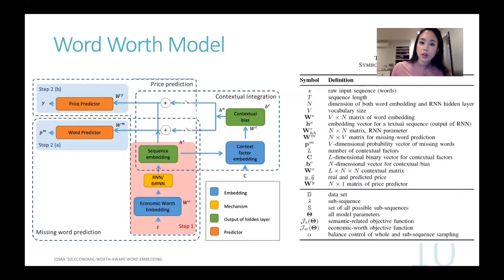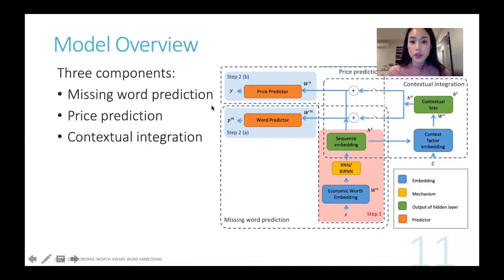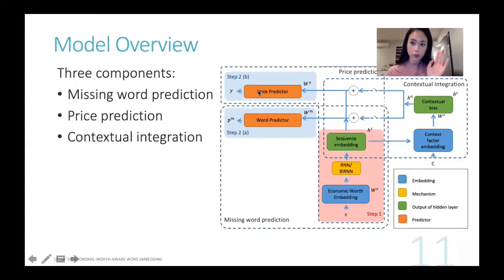Let's start from the model design — a bit of the model overview. This model contains three components. First of all, the missing word prediction component, which is on the bottom left of the architecture. We also have a price prediction component on the top right corner of this model. And then the next part is the contextual integration, which is on the upper right part of this model. Let's go into them one by one.